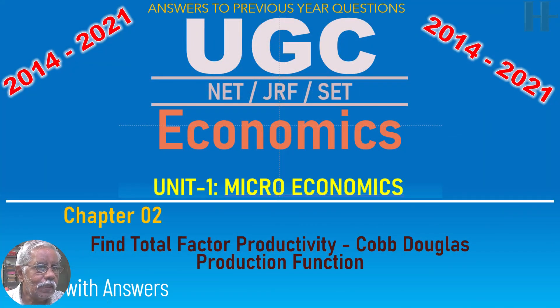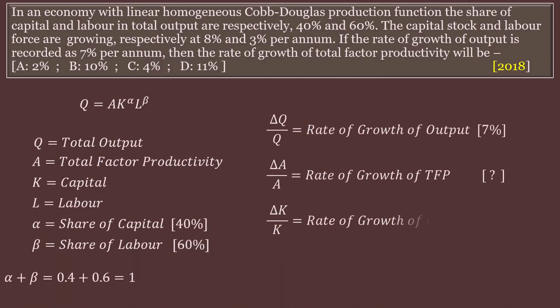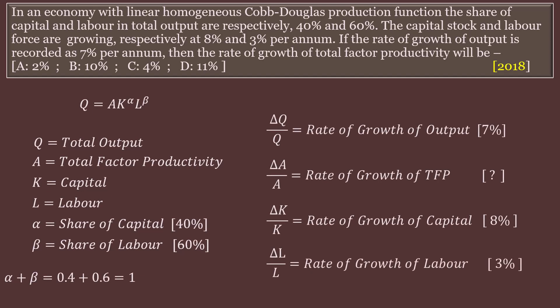Find Total Factor Productivity using the Cobb-Douglas Production Function. I have been answering UGC NET questions for the past few years and I came across this question when I was attempting an answer on production. This needs an elaborate discussion. Whenever you come across a problem like this, you may feel it looks so complicated and cumbersome, but it is not so. After you listen to this lecture, you will feel how easy it is to solve this problem.